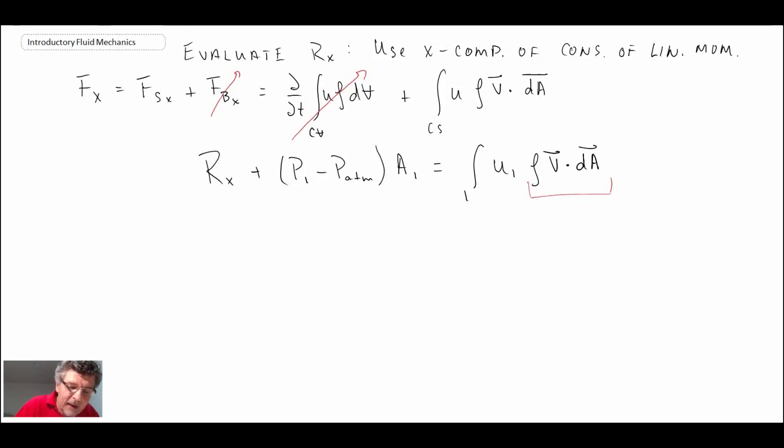So writing out the left hand side and then the right hand side. U1, we know that the U direction or U1 is a positive value, but it's multiplied by - if you recall, we talked about this earlier - for control surface 1, the area vector will be in that direction and the velocity is coming in in that way. So the dot product is going to give us a negative. So we have that.